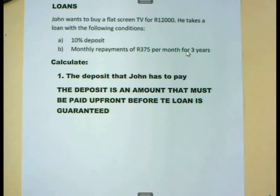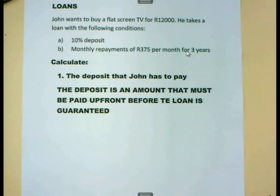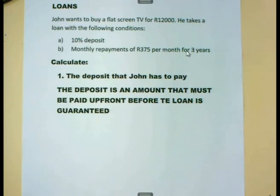Let us look at John in this example. John wants to buy a flat-screen TV for 12,000 rand. He can take a loan with the following conditions: he must pay a 10% deposit and then do monthly repayments of 375 rand per month for three years. Since 375 rand is not such a lot of money, John decides to take this loan so he can have the TV immediately after paying the deposit.